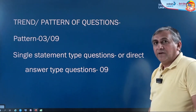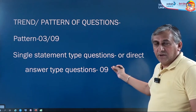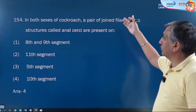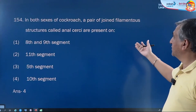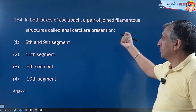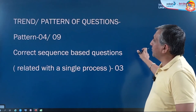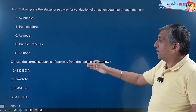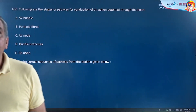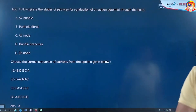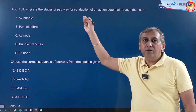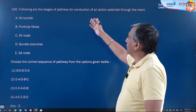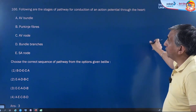The third pattern is the single-statement question — direct questions based on lines of NCERT. Their weightage is also good: nine questions. For example, they ask in cockroach which segment contains the anal cerci — the answer is the 10th segment. Another variety is the correct-sequence type question. For example, they ask how conduction of impulse takes place: it starts from the sino-atrial node, reaches the AV node, then the AV bundle, then the Purkinje fibers. These are sequential type questions that you must prepare.